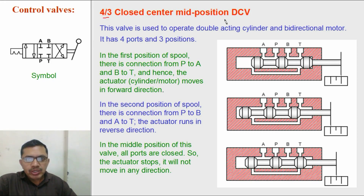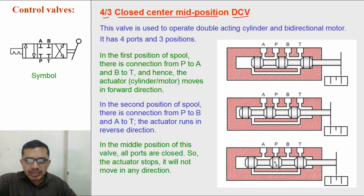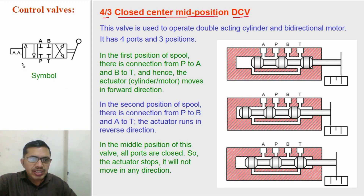Here we are studying a four by three closed center mid position type direction control valve. In the middle position, all ports are closed — A is closed, P is closed, B is closed, and T is closed. The symbolic representation is shown here; in the middle position all ports are closed.